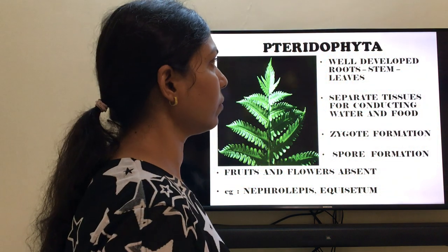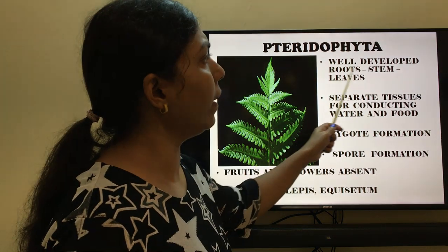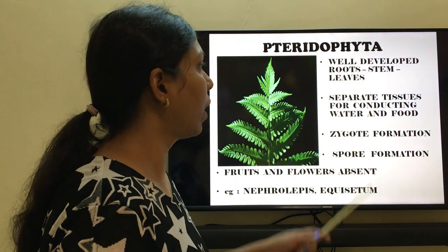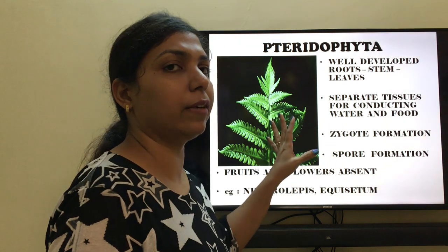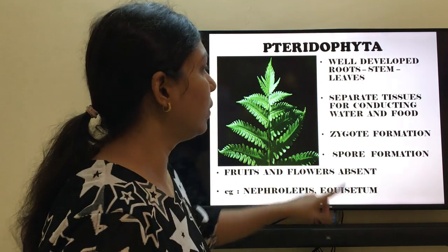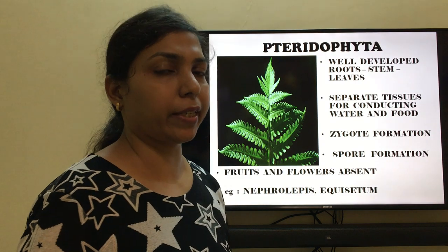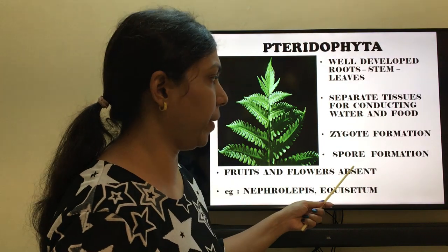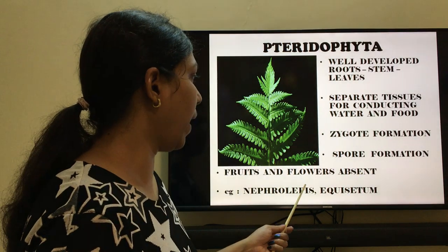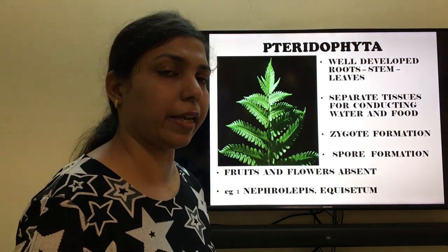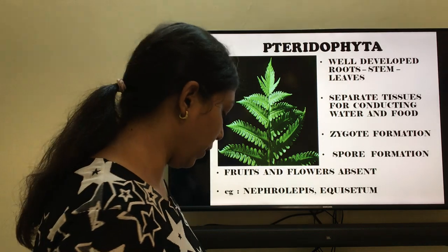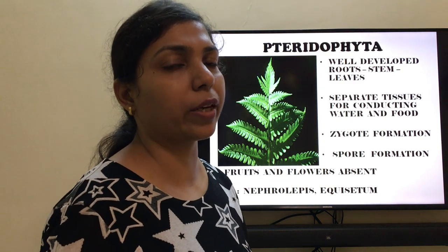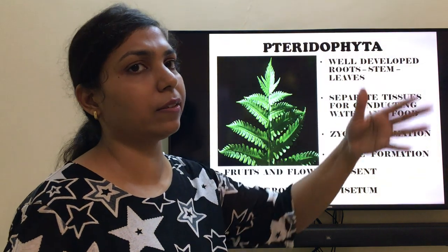Next is Pteridophyta. In Pteridophyta, you have well-defined roots, stem, and leaves — you can actually see them clearly. There are separate tissues for conducting water and food; xylem and phloem are present in these plants. Reproduction can take place sexually through zygote formation, producing a new plant, or asexually by spore formation. Fruits and flowers are absent. For example, Nephrolepis is a very common fern usually grown as an ornamental plant in hanging pots or in gardens.